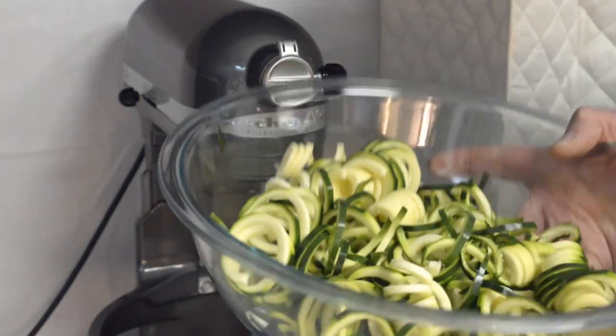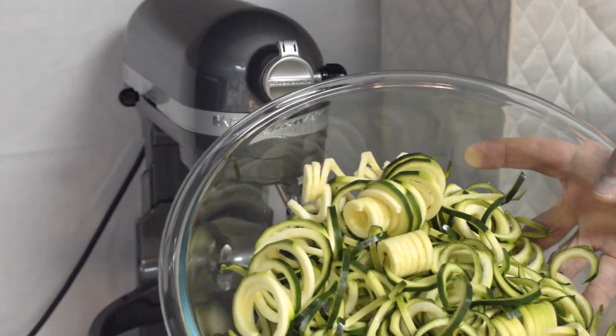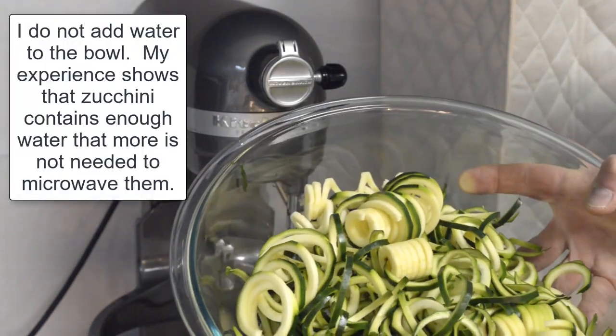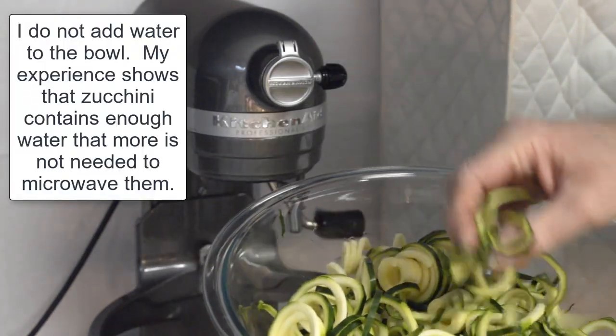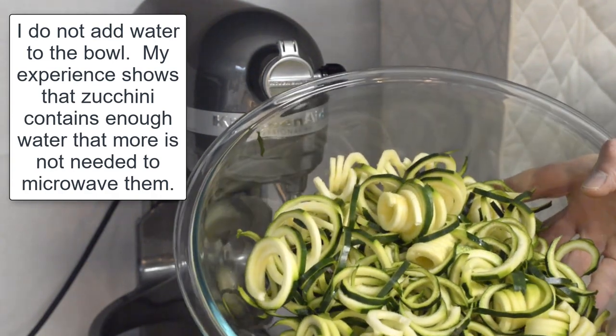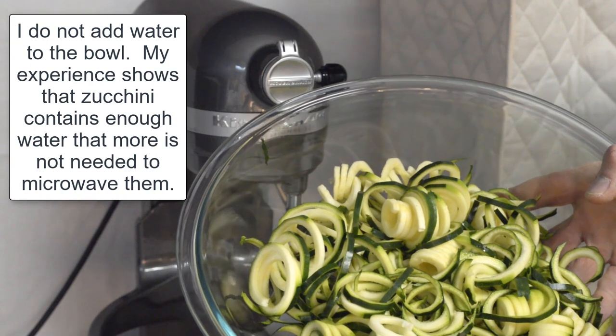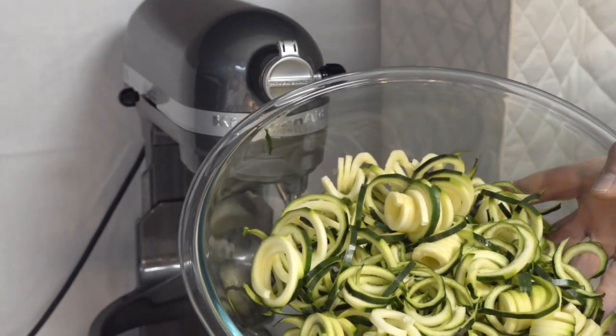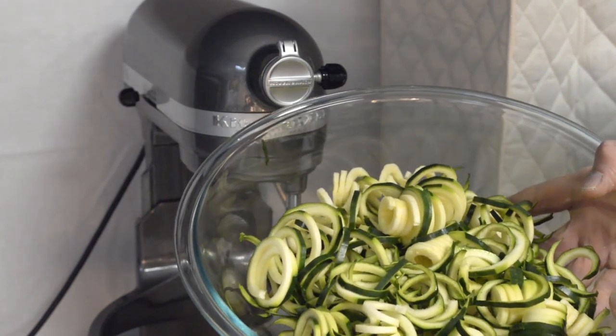So, this is how much zucchini noodles I made. We will cook them in the microwave. Generally depending on how much you have, it could take somewhere between 5 and 10 minutes, and it also depends on the strength of your microwave. So I hope this information has been useful to you, and thank you for watching.